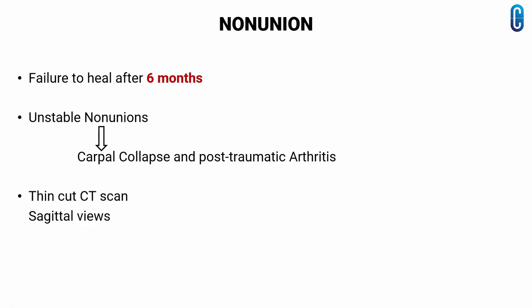A thin-cut CT scan shows more detail than a conventional CT. Sagittal views are also helpful in determining the degree of carpal collapse and humpback deformity.